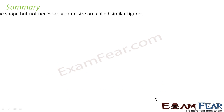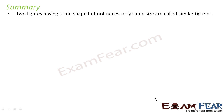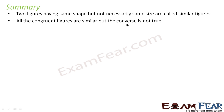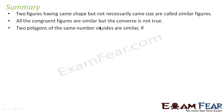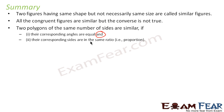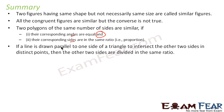Now let us go for the summary. Two figures having the same shape but not necessarily the same size are called similar figures. All congruent figures are similar, but the converse is not true — similar figures are not necessarily congruent. Two polygons of the same number of sides are similar if their corresponding angles are equal and corresponding sides are proportional.